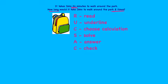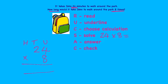We've worked out that we need to do 24 times 8. I'm going to set it out with hundreds, tens and units and do 24 times 8. So 8 times 4 is 32; 8 times 2 is 16, plus the 3 carried gives 19. So my answer is 192.